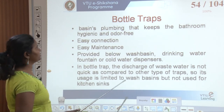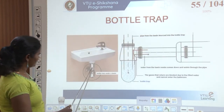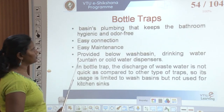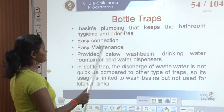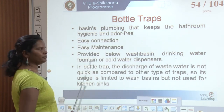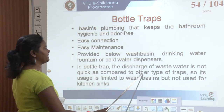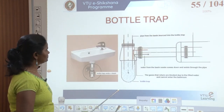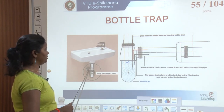Bottle traps are used less commonly — mostly for wash basins and drinking water fountains or cold water dispensers. They are easy to maintain and connect, and are provided below the wash basin. The disadvantage is that discharge of waste water is not as quick as compared to other types of traps. The bottle trap can be removed and cleaned, and it also has a water seal.